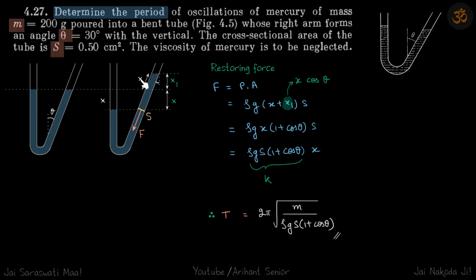So how much will it rise? It will also rise by an amount X. So this by volume conservation, so cross-sectional area S into X is equal to cross-sectional area S into X. So this distance is X and this is, this angle is theta, so X1 is X cos theta.